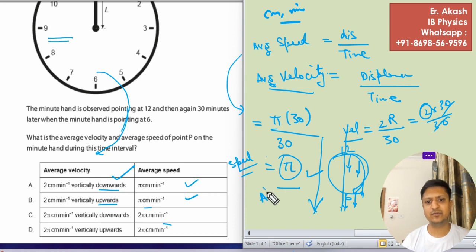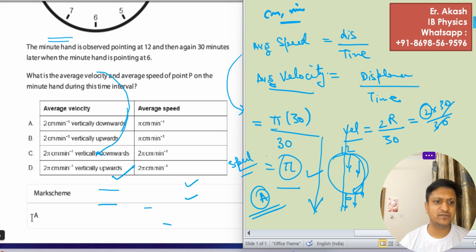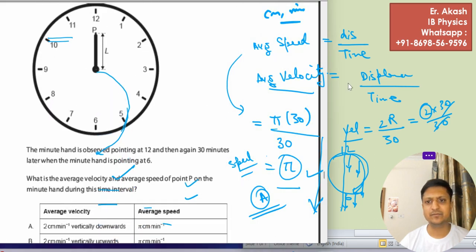So option A will be the right answer. We will check the mark scheme now. Mark scheme says A. So A is the right answer.